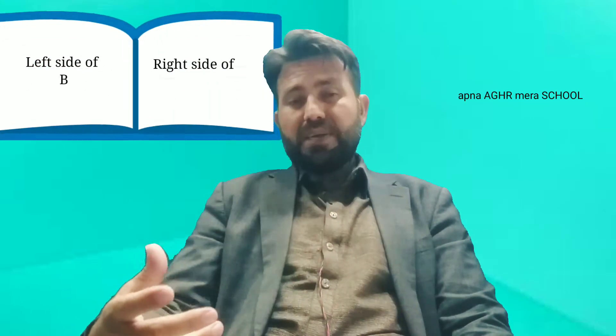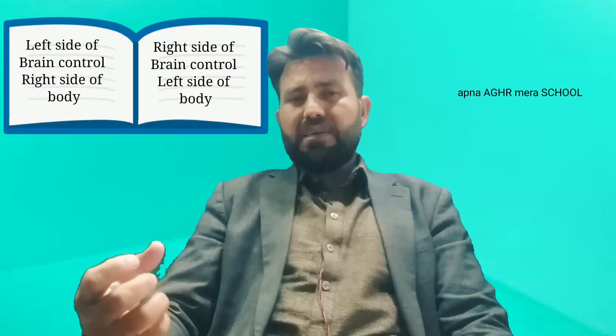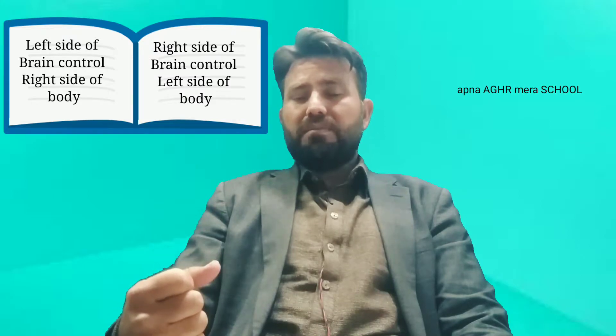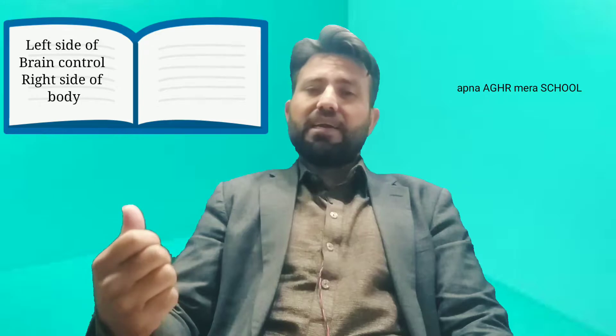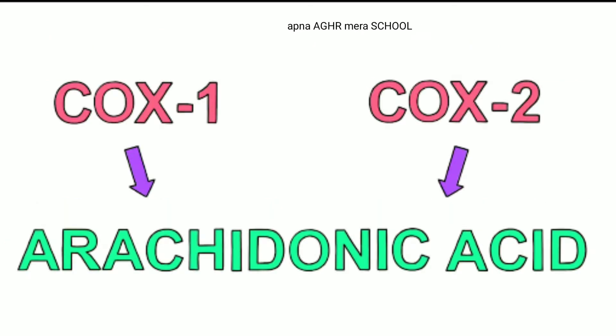We are taking the example of a human hand — for example, the right hand of a human becomes injured. I mention the right hand because the sensation of this pain will be transmitted to the left side of the brain, as the left side of the brain controls the right side of the body and the right brain controls the left side. When human tissue or cells become injured, the injured cells release a chemical called arachidonic acid, which combines with COX-1 and COX-2 enzymes.